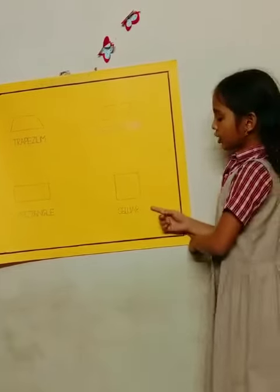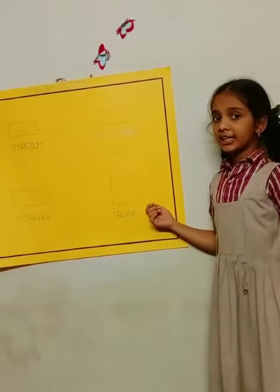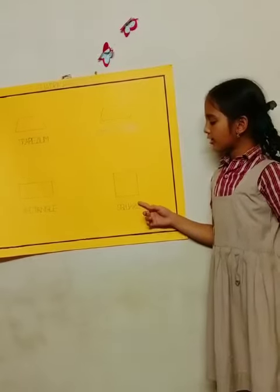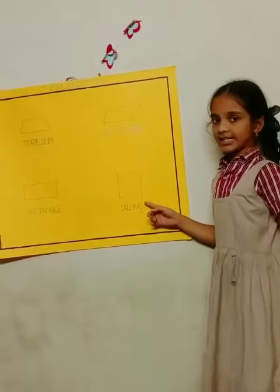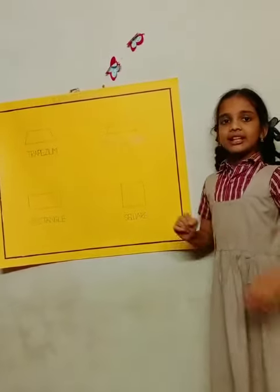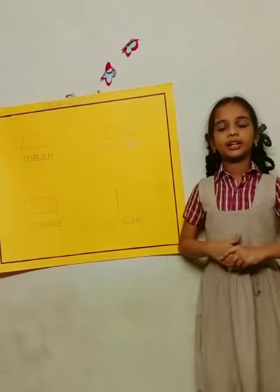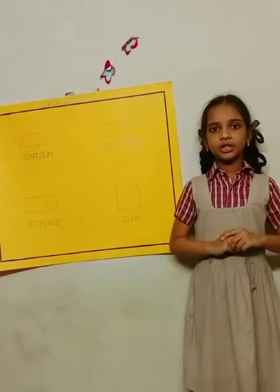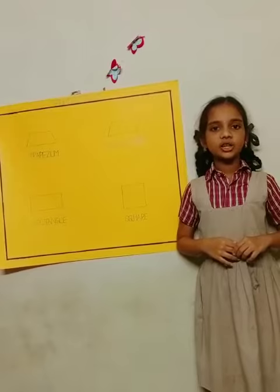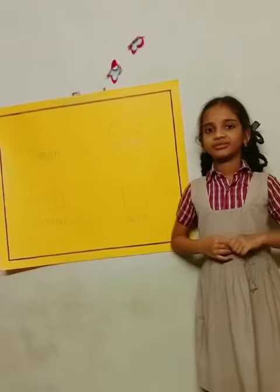And last one is square. A square is a rectangle in which all 4 sides are equal. So this is the explanation of quadrilaterals in the geometry lesson. Thank you.